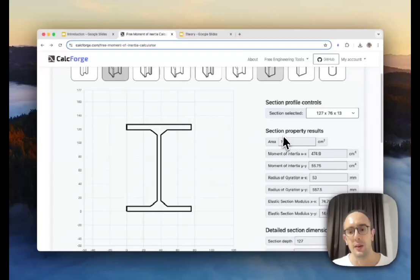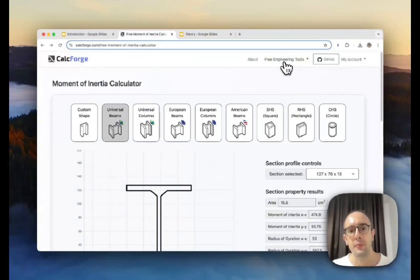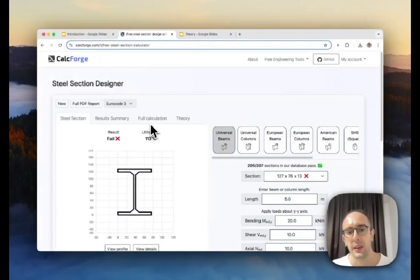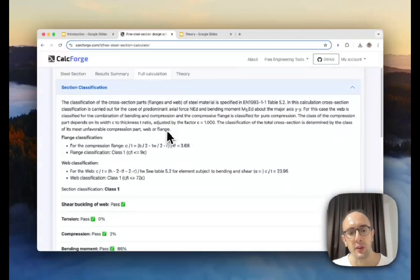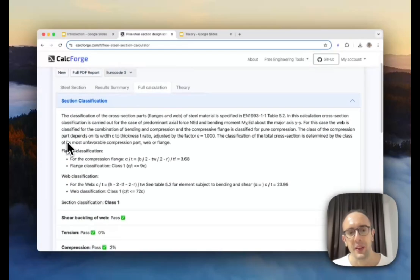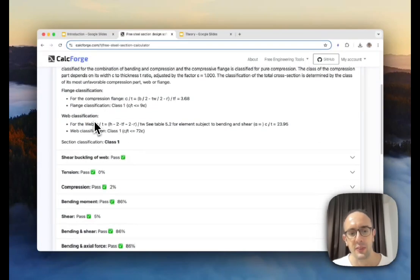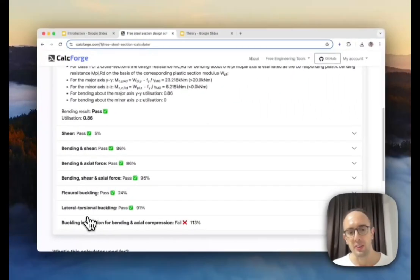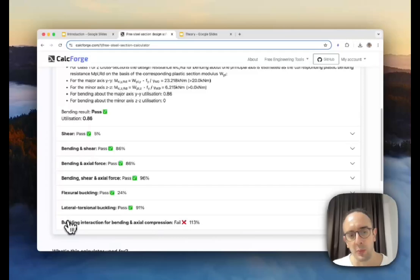But as we saw in the calculation that we were just looking at on the steel section designer on calcforge.com you'll see here you have many different other checks that need to be done so start with section classification bending is down here but we also have many other checks that need to be done so if you're interested to see some more theory on some of these other checks that have been done please do comment below and I'll create some more videos thank you for listening.